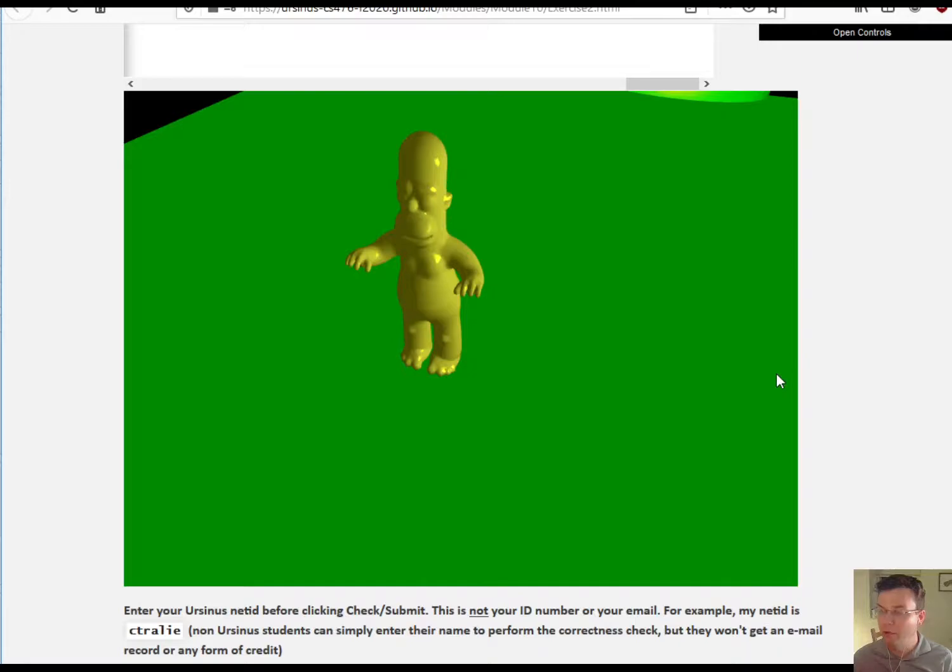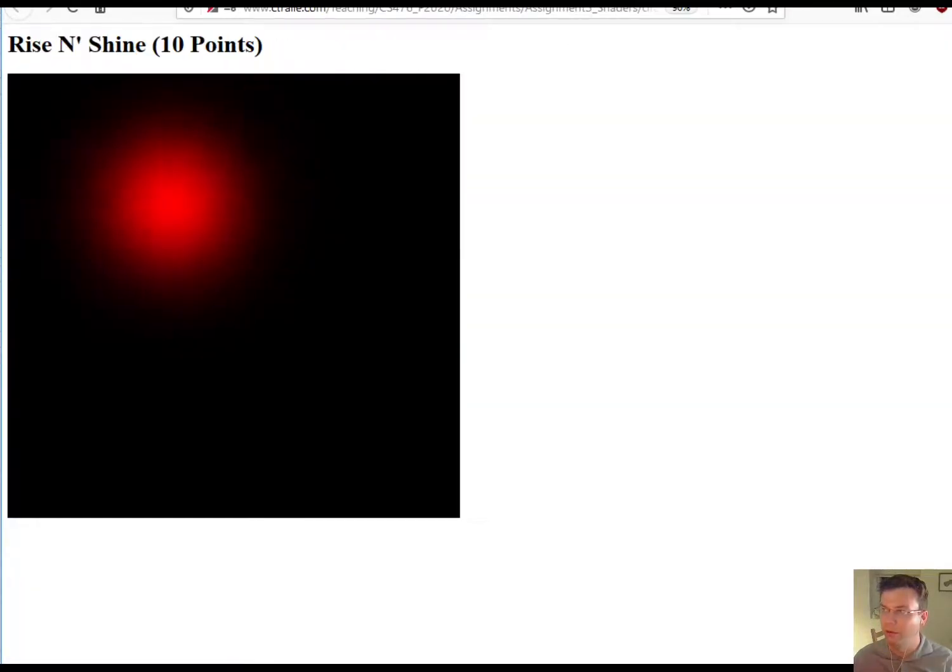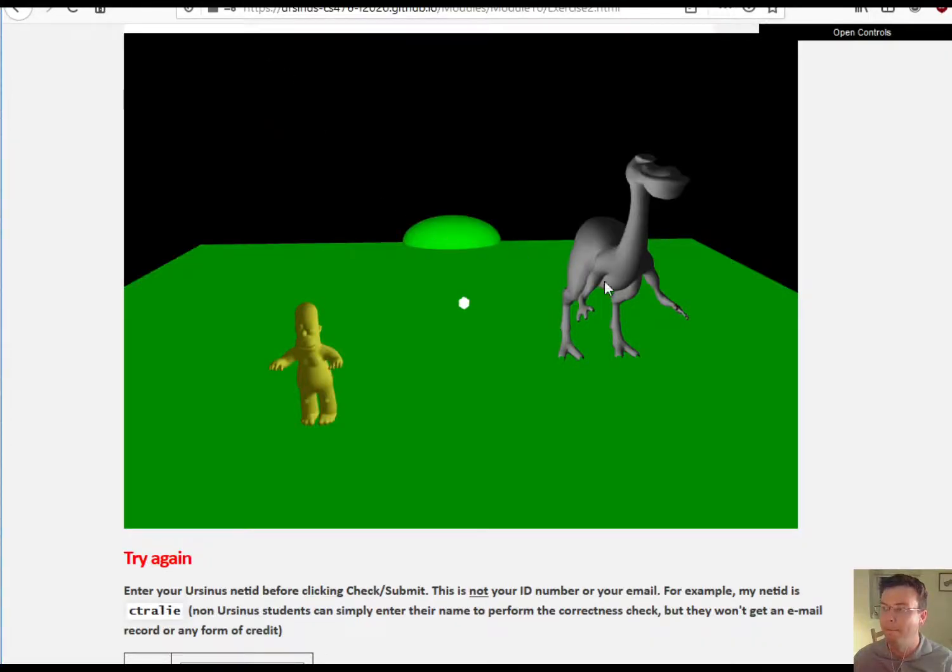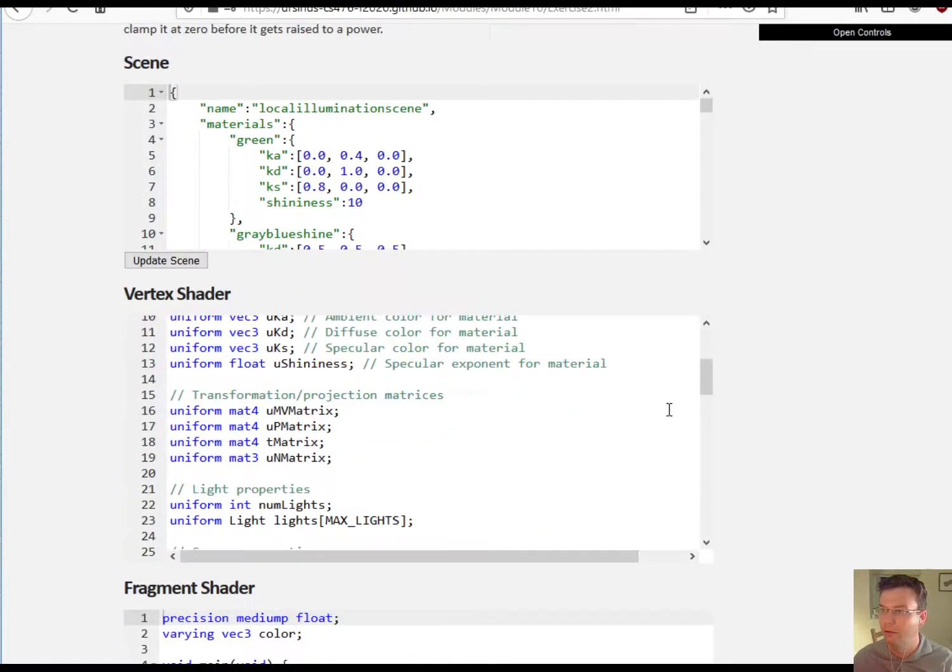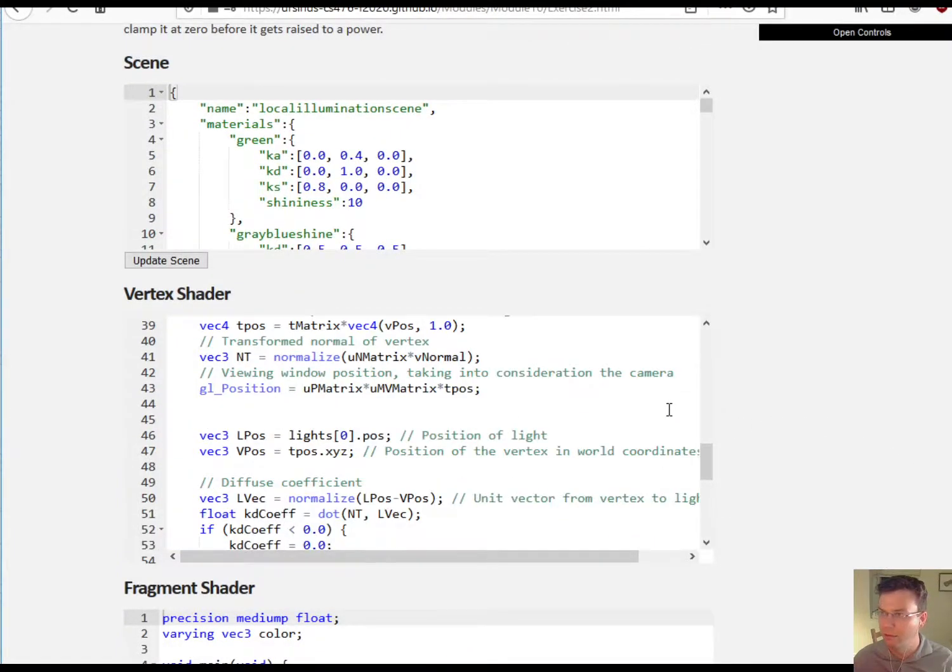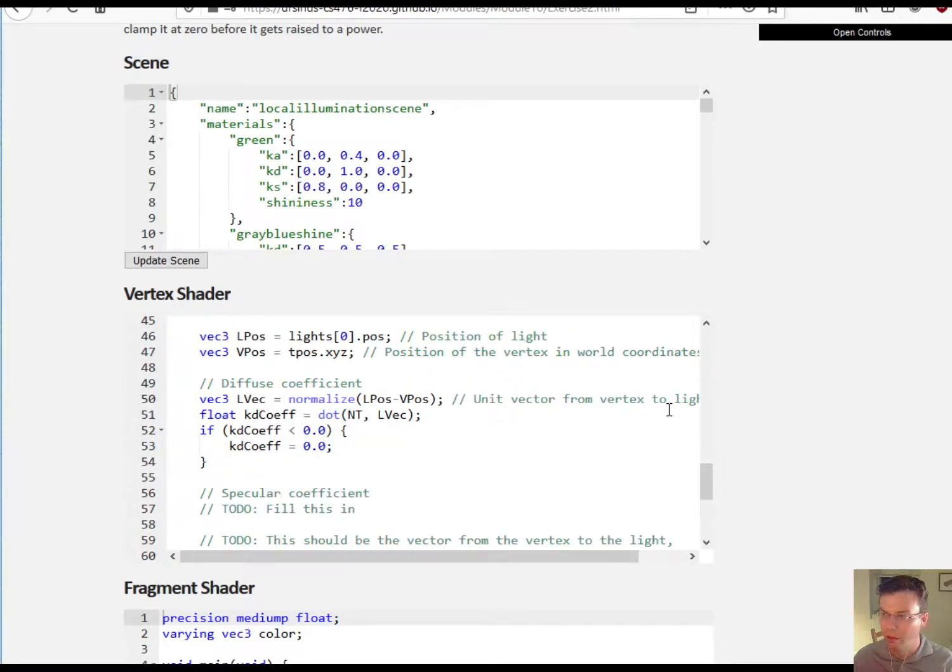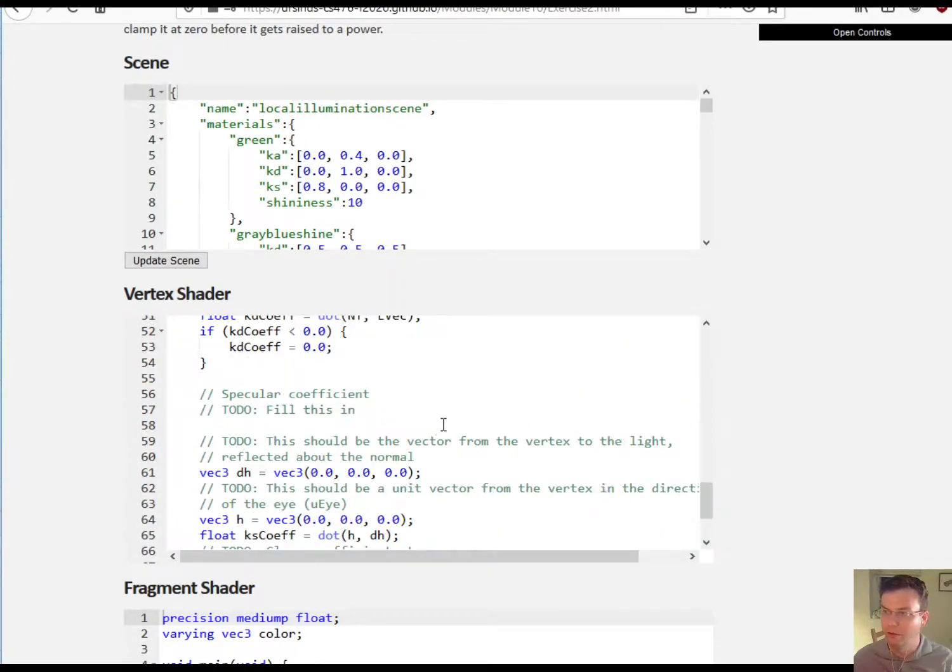So now I want you to try to implement this in here. So I've given you some code to start with, just like before. And what you have to do is figure out the reflection, and then figure out the vector to the eye.